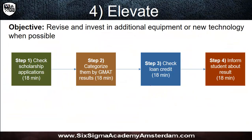Step four is to elevate — revise and invest in additional equipment or new technology when possible. You're not done when you shaved off two minutes from step two, bringing it from 20 to 18 minutes — that was just an in-between step. Your next goal is to bring that 18 minutes to 16, then to 14, and so on. Shave off as much as you can for as long as you can. And once you shave off time from step two, make sure you repeat step three — rebalance the whole thing.